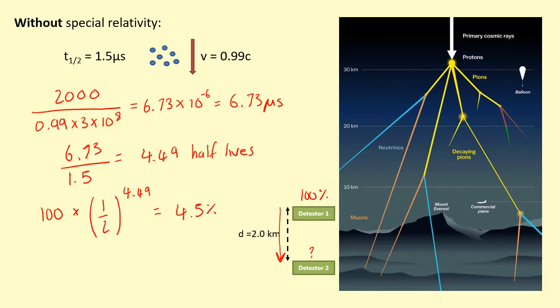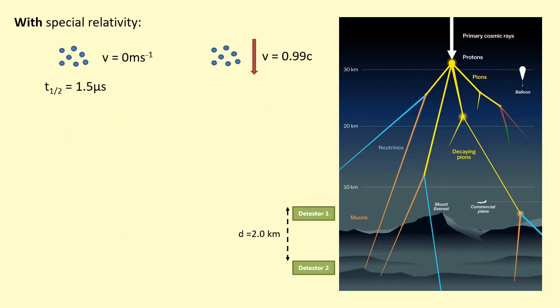Which isn't that much, so we expect that most of the muons from the first detector don't make it to the second detector. It turns out this isn't what happens. Now we're going to see if we can explain correctly what happened using special relativity and length contraction. The half life is still 1.5 microseconds, that's in a frame at rest with respect to the muons.